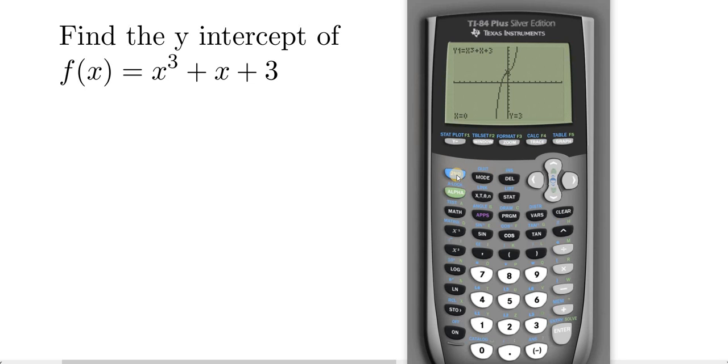If you wanted to enter another value, for example, like 5, you would hit second trace, value. Well, how about 1, and then enter, and then it would give you the y-value at x equals 1 as well.